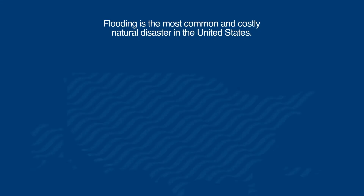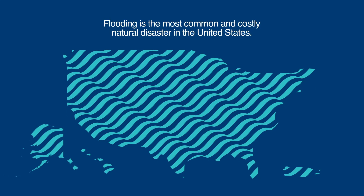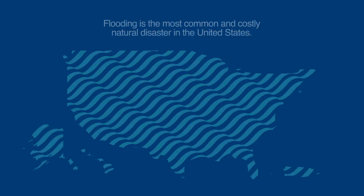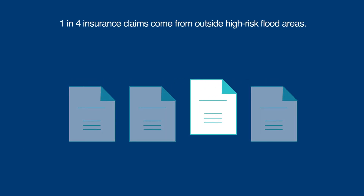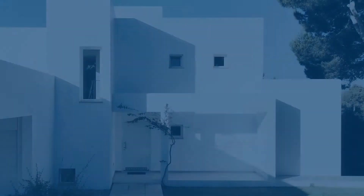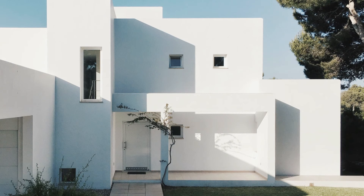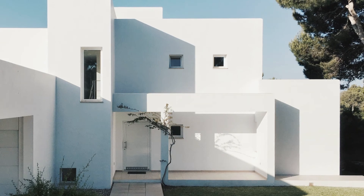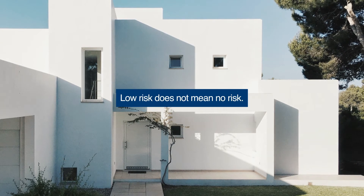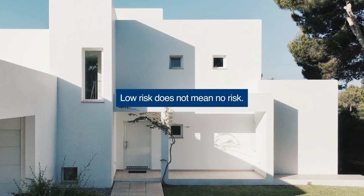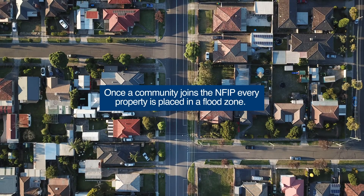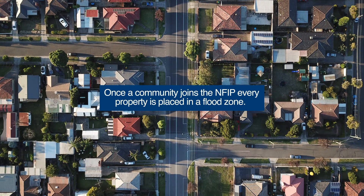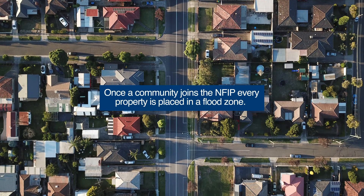Flooding is the most common and costly natural disaster in the United States. One in four insurance claims comes from outside high-risk flood areas. While the policyholder may be at a lower risk of flooding, low risk does not mean no risk. Once a community joins the National Flood Insurance Program, every property is placed in a flood zone.